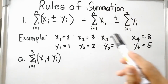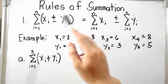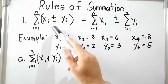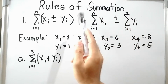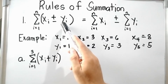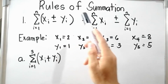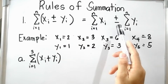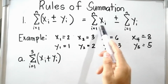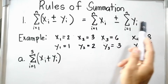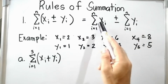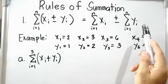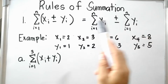Now let us have the rules of summation. The first rule is: the summation of the sum or difference of two terms x sub i and y sub i is equal to the sum or difference of two individual summations — summation of x sub i and summation of y sub i.